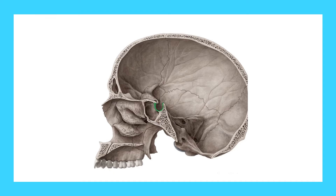The pituitary gland is located in the pituitary fossa. This pituitary fossa is located in a bone called the sella turcica. This bone is called the sphenoid bone. The pituitary gland is located in this fossa, which is also called the hypophyseal fossa.